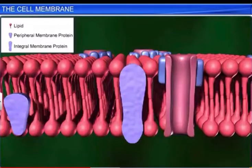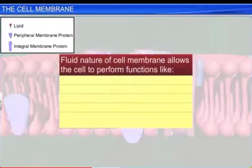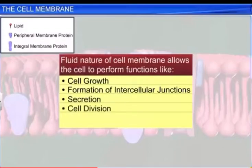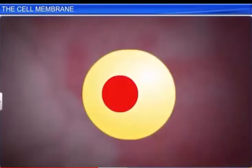The fluid nature of the membrane also allows the cell to perform important functions such as cell growth, the formation of intercellular junctions, secretion and cell division. All these functions require flexibility in the membrane.